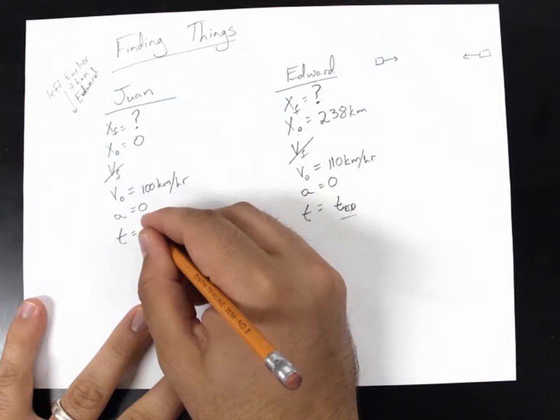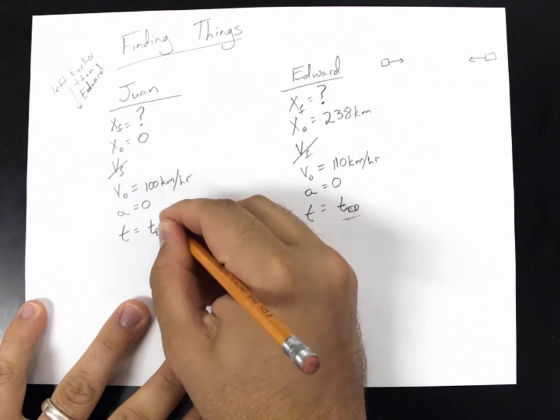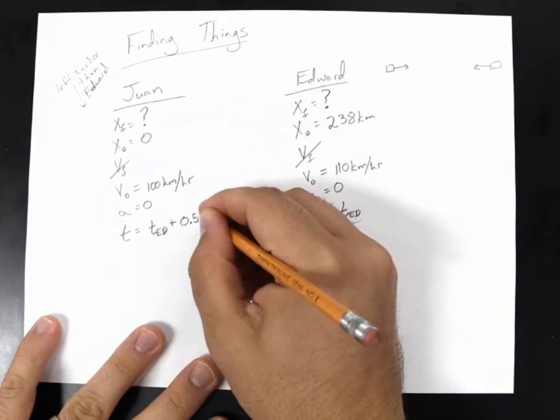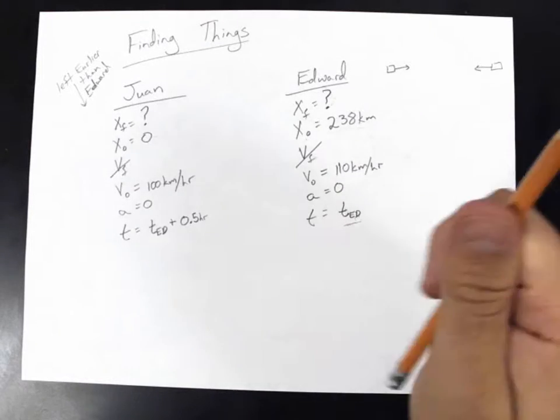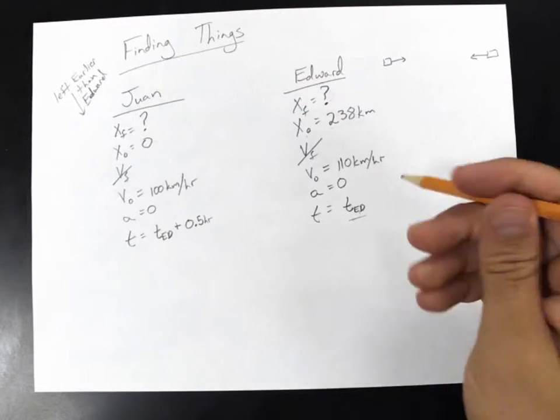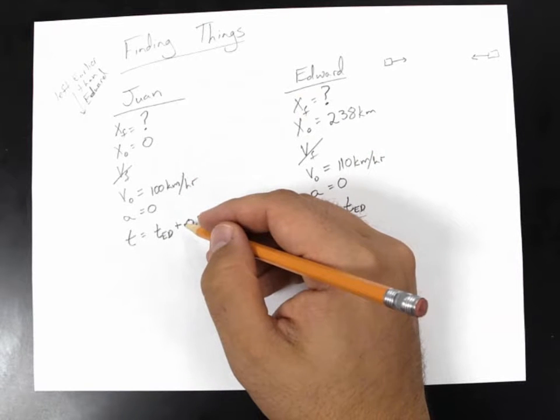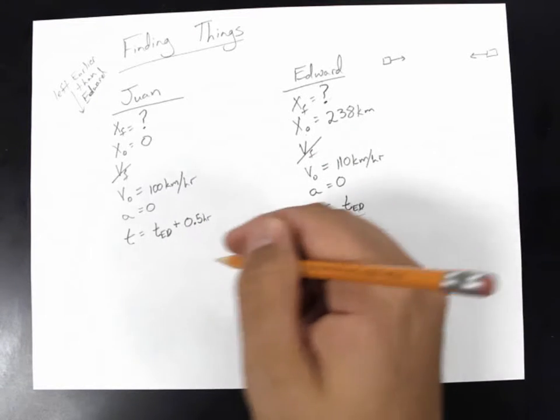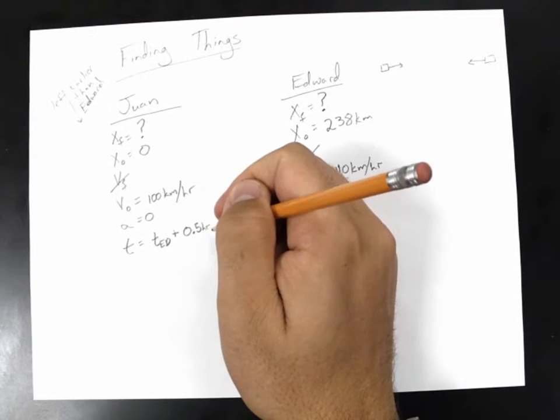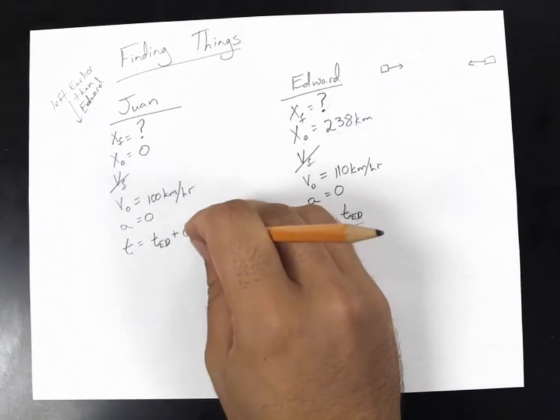If Edward leaves at 1230, we'll call his time T-Ed, or Tedward. Oh my gosh, that's awesome. Anyway, time Ed. This is the time that Ed spends on the road until he reaches his final destination. Time Ed, if the people from final destination are watching this video, no way. All right, now, the time that Ed is on the road until he gets to X final. We do not know this number. So we have to call it a variable. We have no idea. Now, Juan has been traveling for Ted, right? He's been traveling for the same amount of time, but he's also been traveling for an extra half an hour.